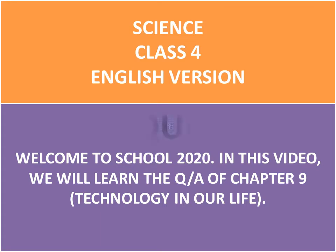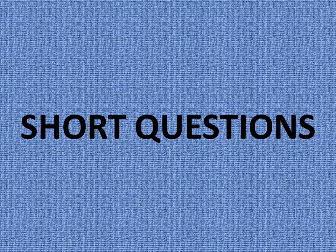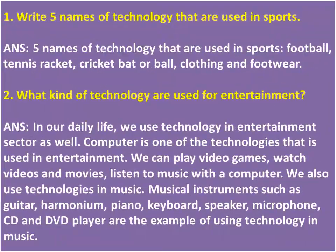Short question number one: Write five names of technology that are used in sports. Answer: Five names of technology that are used in sports are football, tennis racket, cricket bat or ball, clothing, and footwear.